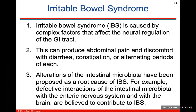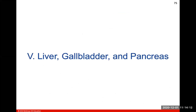Irritable bowel syndrome is caused by complex factors that affect the neural regulation of your GI tract, producing pain, diarrhea, and constipation. Alterations of your intestinal microbiota have been proposed as a root cause. Defective interactions of the intestinal microbiota with the enteric nervous system and with the brain are believed to contribute to irritable bowel syndrome.